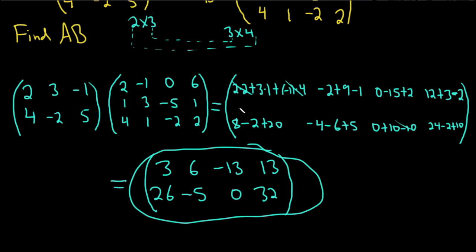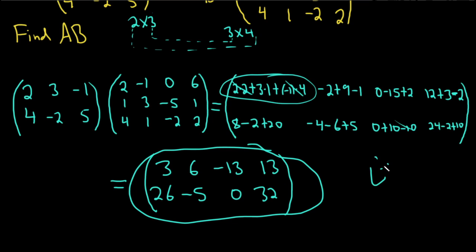To summarize the method: to find any entry, say the one in the first row, first column, you use the first row of A and the first column of B. For the entry in the second row, second column, you use the second row of A and the second column of B — so 4 times negative 1 is negative 4, negative 2 times 3 is negative 6, 5 times 1 is 5. Hopefully this video has been helpful. Good luck.